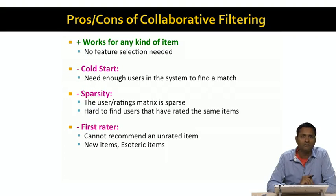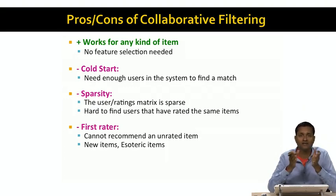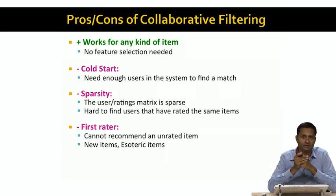The next problem is the first rater problem. Suppose we add a new item to the catalog — we cannot recommend this new item to anybody, because the new item doesn't have any ratings. And esoteric items — where there may be a few people who really love the item but the number of people who like it is really small — tend to have a smaller number of ratings, making it hard to make recommendations for those items too.